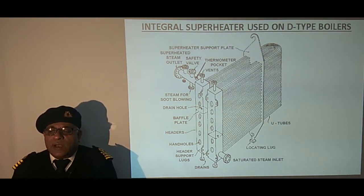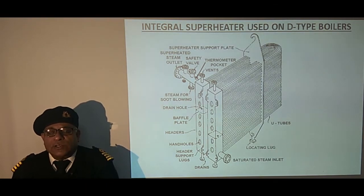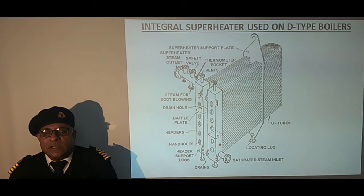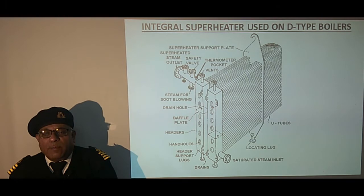It consists of two headers to which U-tubes are attached. Each header is equipped with a baffle plate, due to which steam takes three passes through the flue gas passage before it leaves the superheater. The steam enters from the inlet connection, takes a pass to the outlet header, then goes up through the upper tubes, comes back to the inlet header, and finally goes out from the outlet pipe.